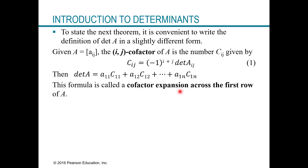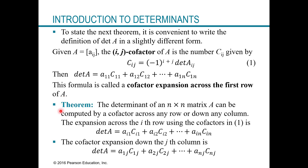This is called cofactor expansion, specifically across the first row. But we can pick any row or column. The theorem states: the determinant of an n by n matrix can be computed by cofactor expansion across any row or down any column. If you choose the ith row, the determinant is the sum of each element in that row times its cofactor. Similarly, you can expand down any column.